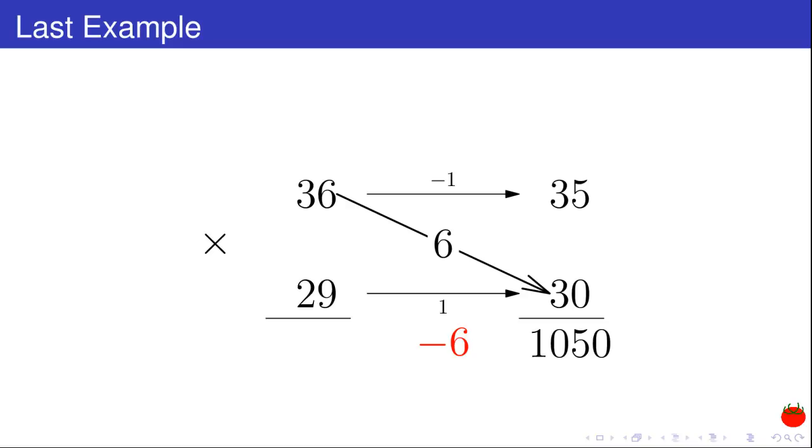Remember, my offset is minus 1. Just add the two products. 1,050 minus 6 is equal to 1,044.